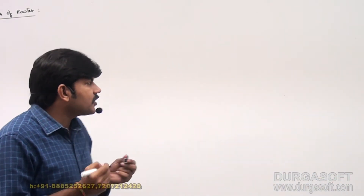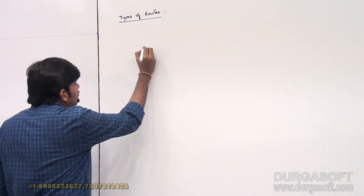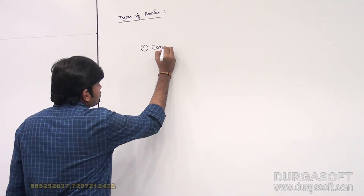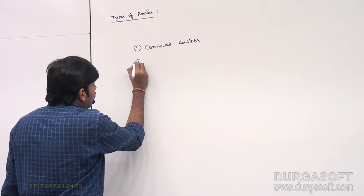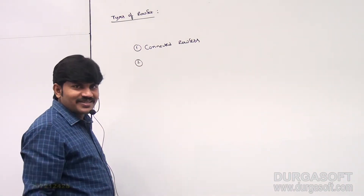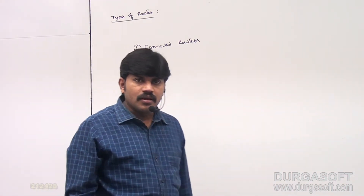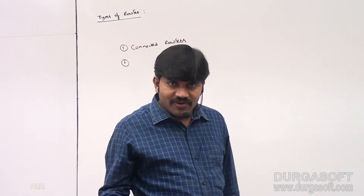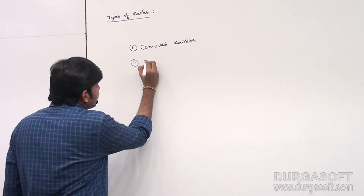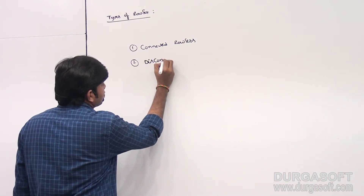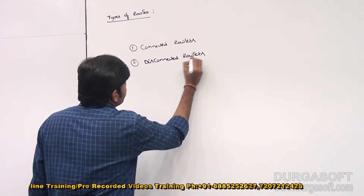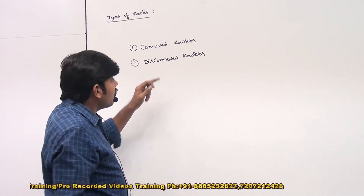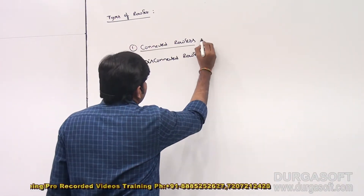All RowSets are divided into two types. The first one is connected RowSets. The second one is disconnected RowSets. Are you getting that? First one is connected RowSet, second one is disconnected RowSet.